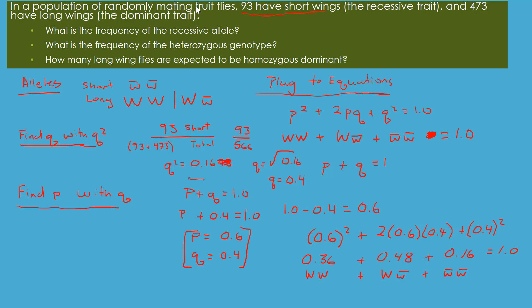Now let's write our answers. First, the frequency of the recessive allele: q = 0.4. Second, the frequency of the heterozygous genotype (big W little w): 2pq = 0.48.